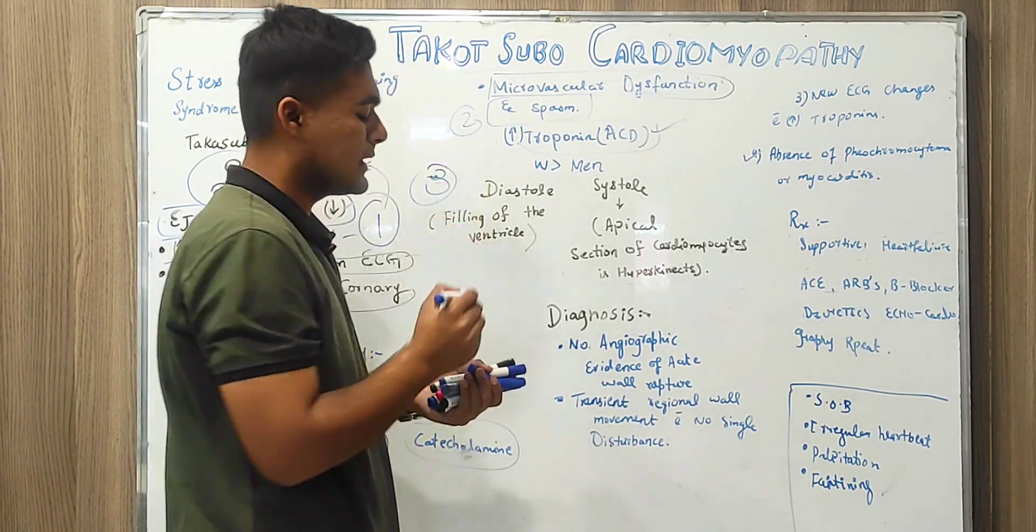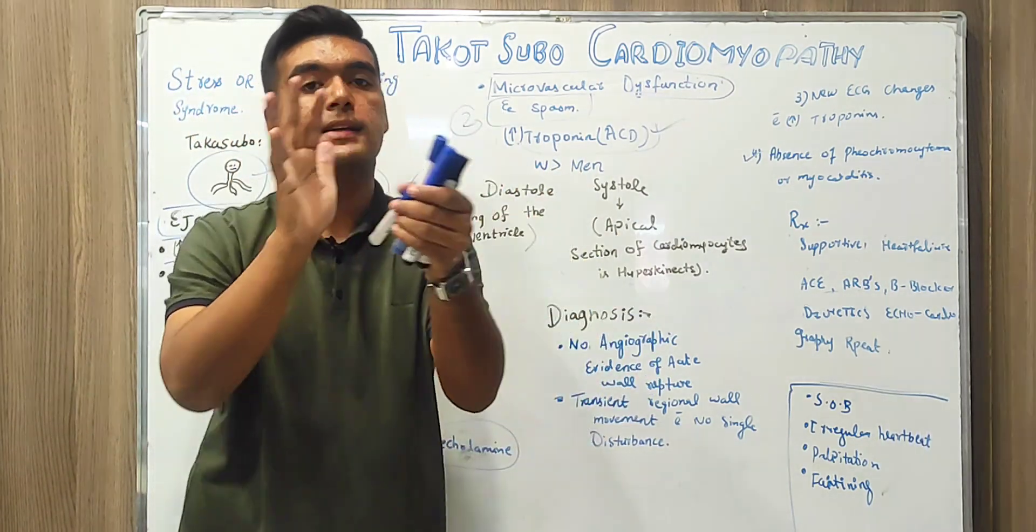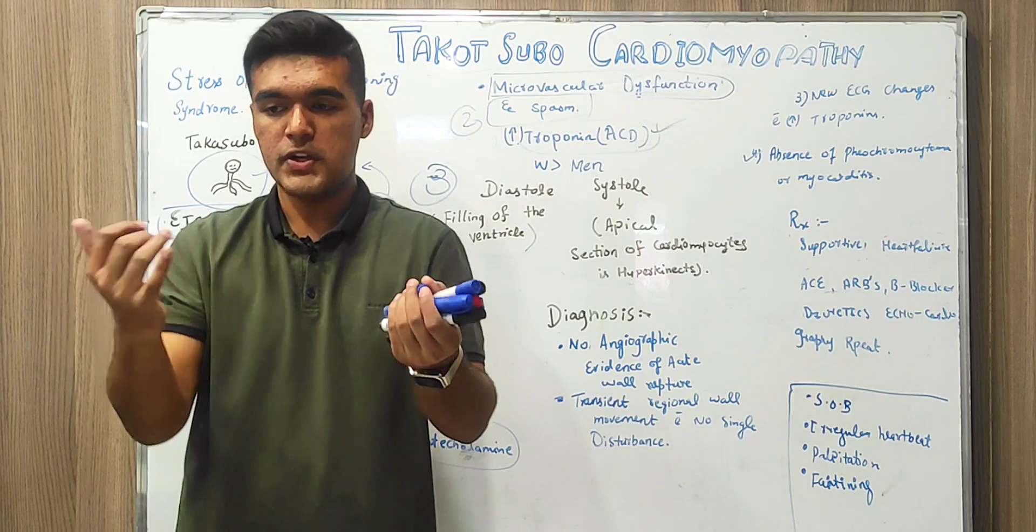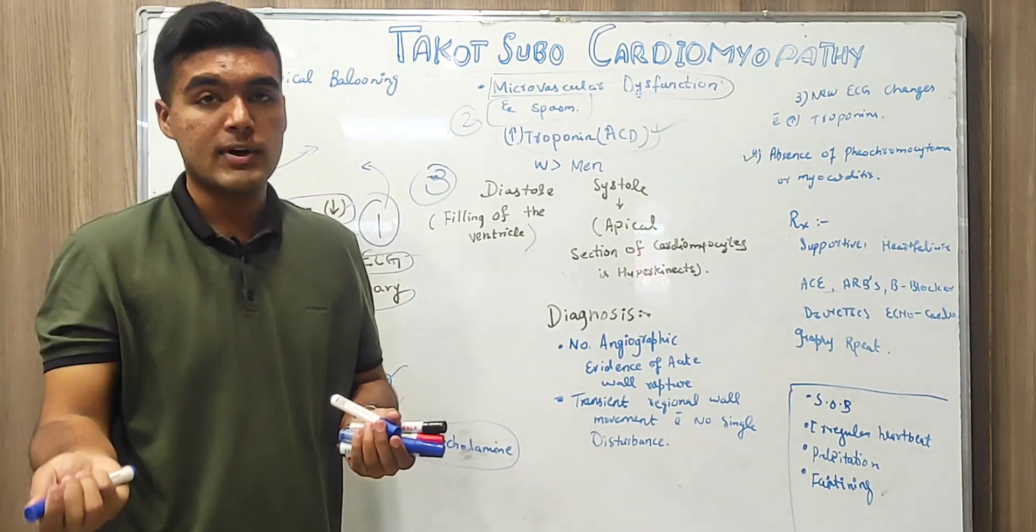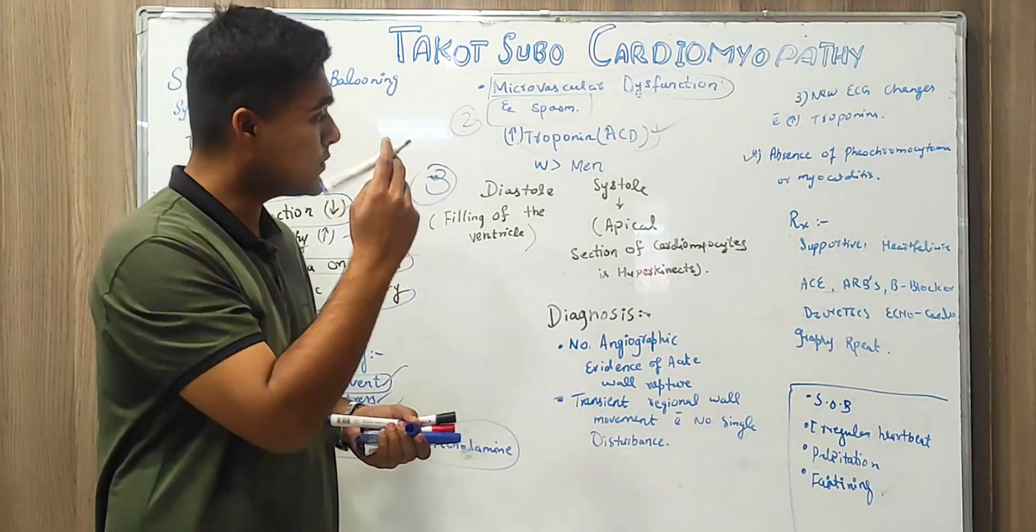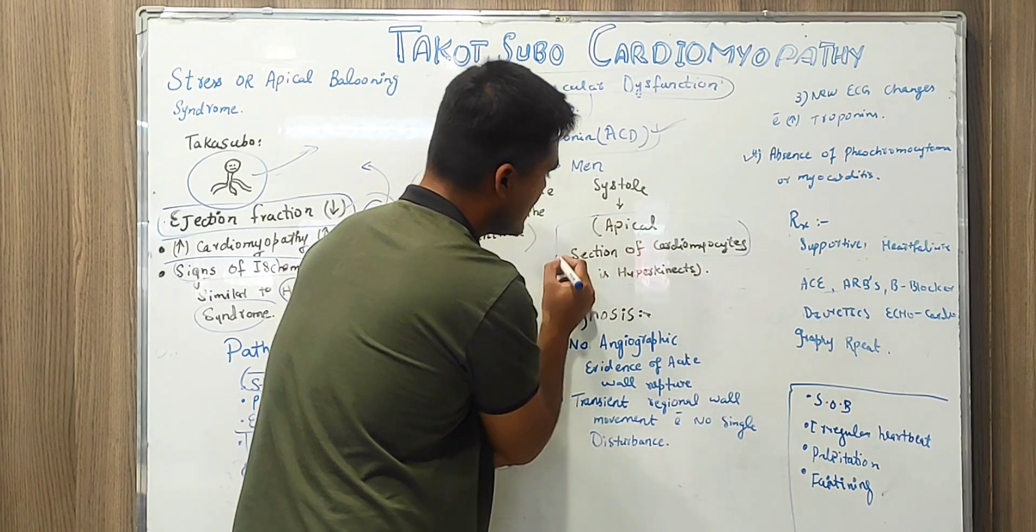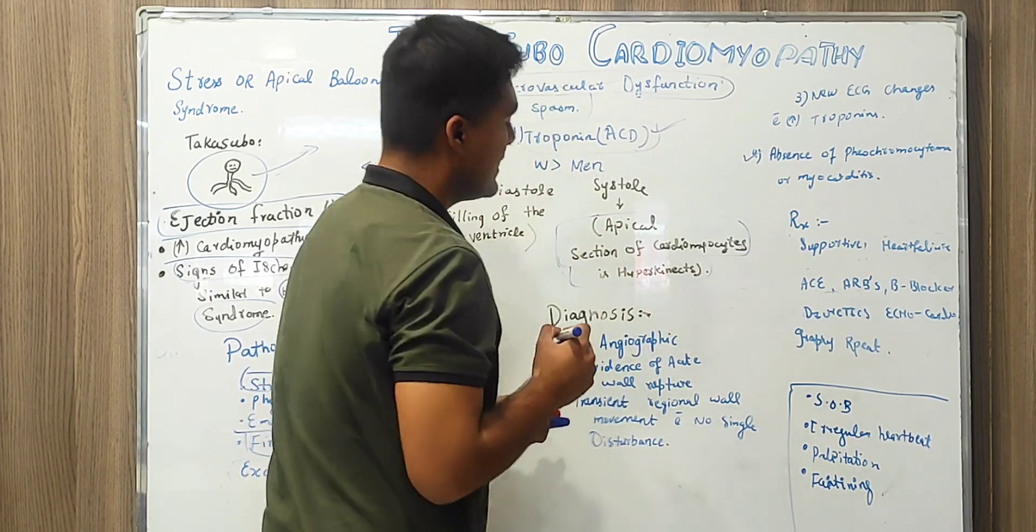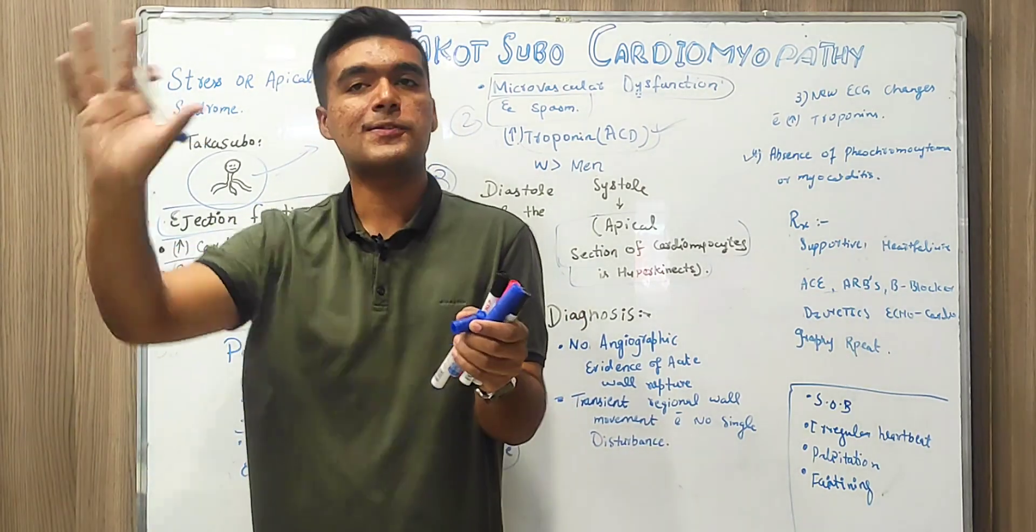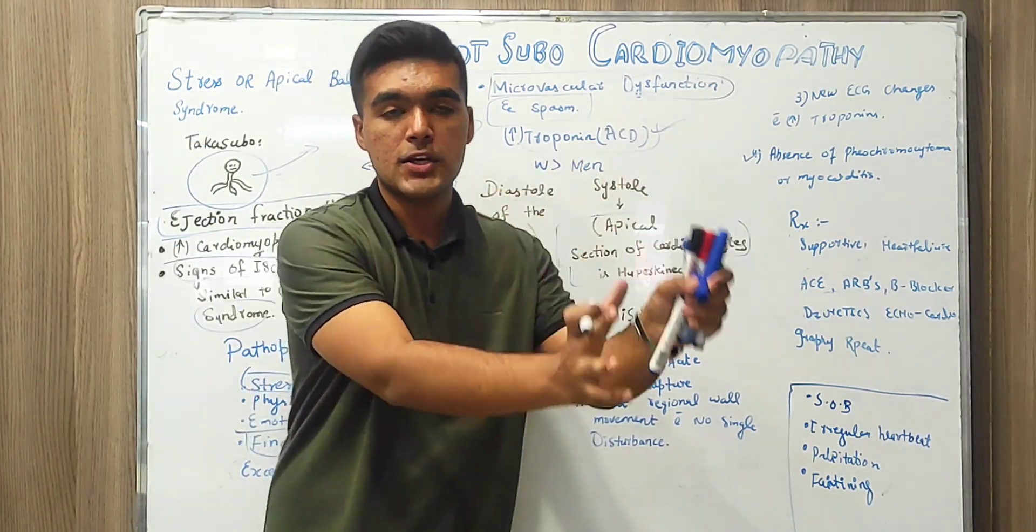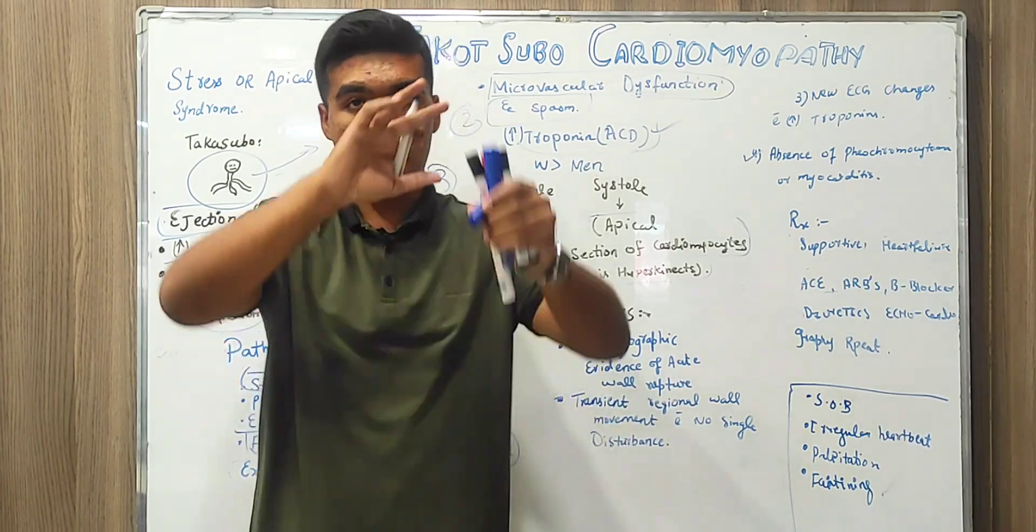Now the third point for diagnosing is talking about systole and diastole. When a patient approaches us, we observe the diastole phenomena. In that, filling of ventricles takes place. But in systole, there are cardiomyocytes in the apical section, they are hyperkinetic. In case of diastole, there is filling that takes place in the ventricle. But in case of systole, there are hyperkinetic cardiomyocytes in the apical section.